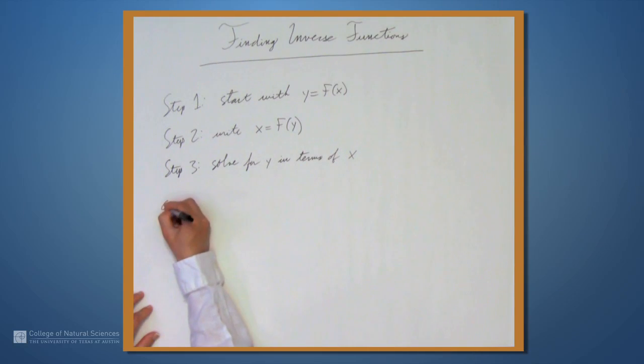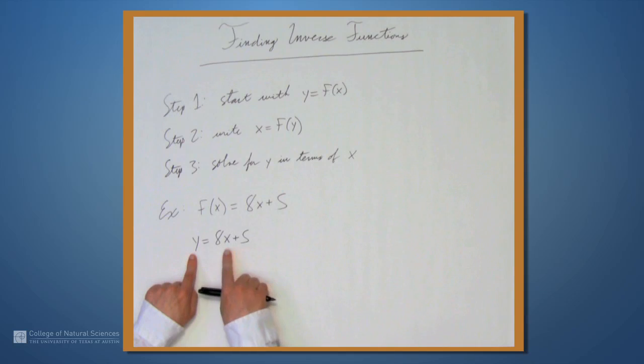For example, let's start with one of the simplest types of functions, namely a linear function. So let's let f(x) be 8x plus 5. We start by writing y equals 8x plus 5. We switch the place of y and x, so we get x equals 8y plus 5.